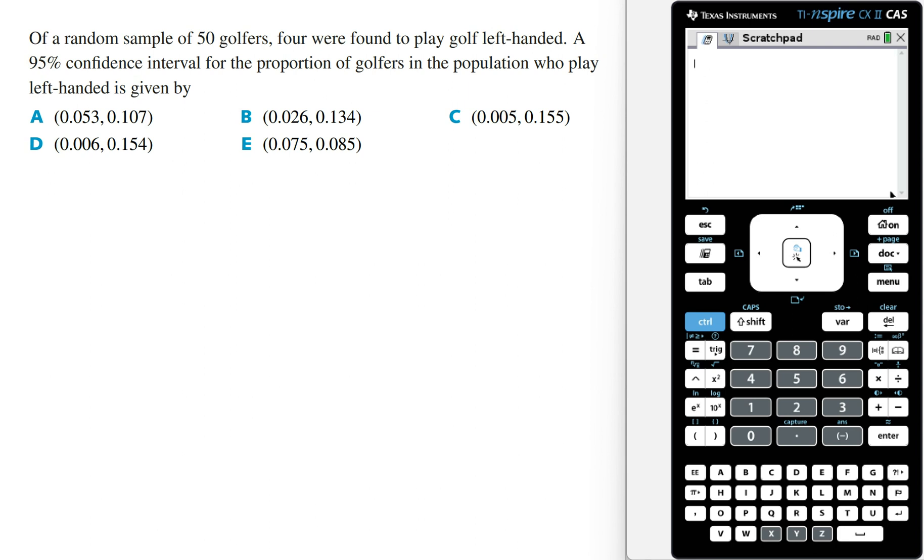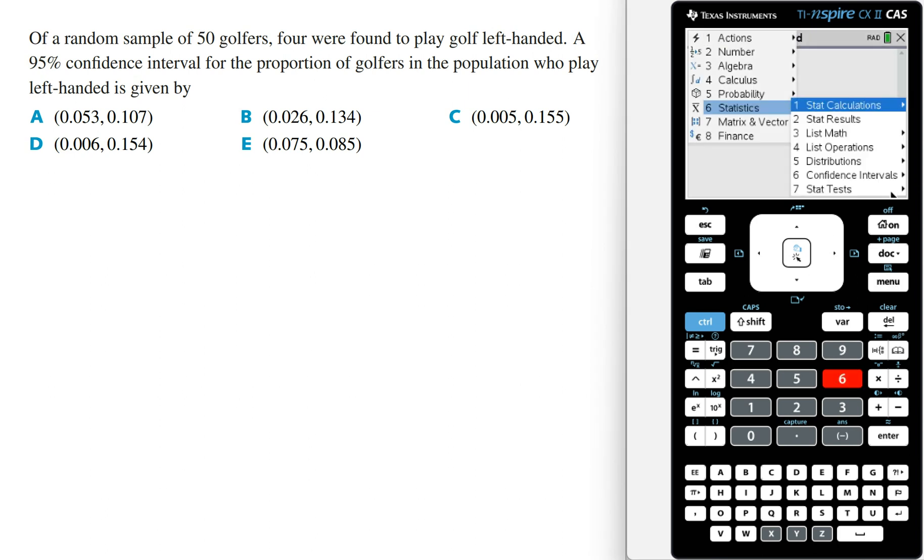To quickly work out the 95% confidence interval, we need to use the 1-prop Z command in the calculator. To do this, we go to Menu, then Statistics, then Confidence Intervals, then 1-prop Z Interval.